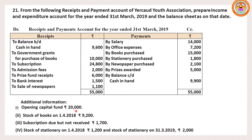Stock of books means opening stock of books — it is an asset with opening value 9,200. Subscription due but not received: current year subscription already received is 24,800; the amount not yet received will be added while writing subscription under income side. Fourth adjustment: stock of stationery on 1-4-2018 and stock of stationery on 31-3-2019 — opening stock and closing stock — will be shown while writing stationery purchase under expenditure side using the formula: opening stock plus purchases minus closing stationery.